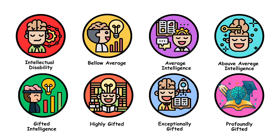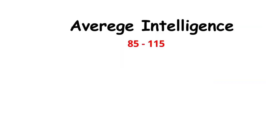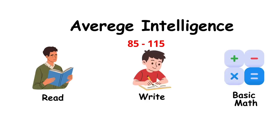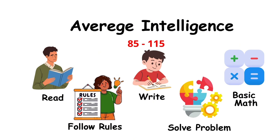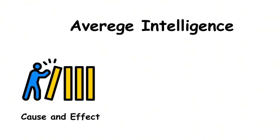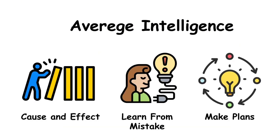Average intelligence means having an IQ between 85 and 115. It allows you to read, write, do basic math, follow rules, and solve everyday problems. You understand cause and effect, make plans, and learn from mistakes.